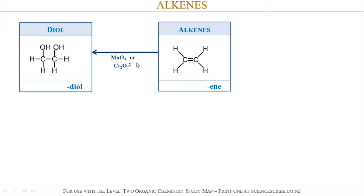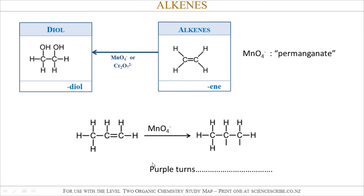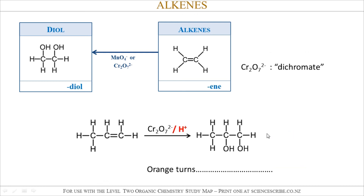Alkenes can also be oxidized using permanganate or dichromate to form something called a diol. The double bond breaks and two new single bonds are formed. If I use permanganate (MnO₄⁻), which is purple, it actually makes MnO₂, which is a brown solid. It forms a diol — all I'm doing is putting OH on each of the carbon atoms in the double bond. If I had used acidified permanganate, then I don't get MnO₂ (brown) anymore; I get Mn²⁺, which is colorless instead. I could also use dichromate (Cr₂O₇²⁻), which is orange — we get the same diol product, but I make Cr³⁺ instead, which is green.